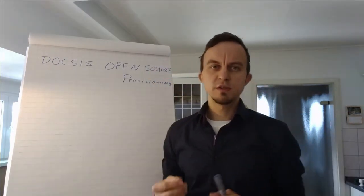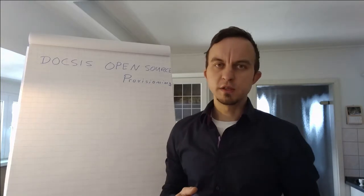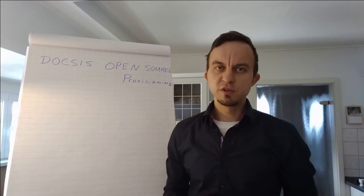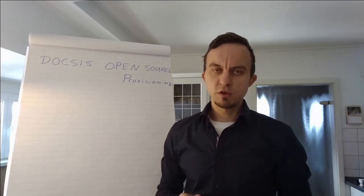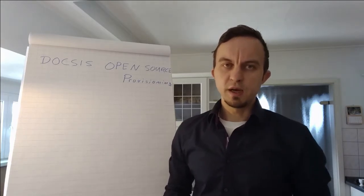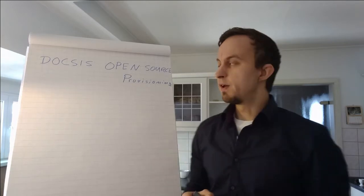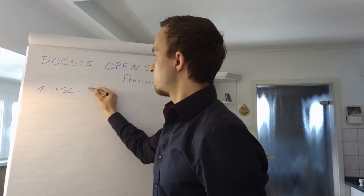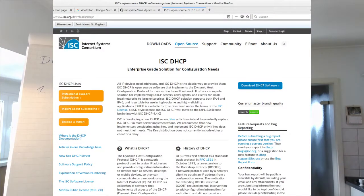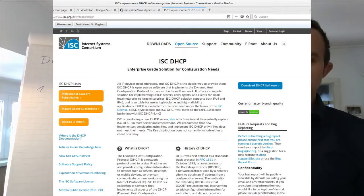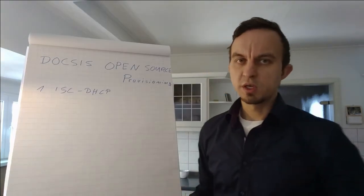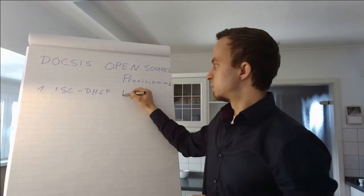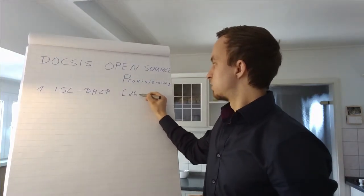The first service that we need to register a cable modem in the DOCSIS standard is the DHCP service, the Dynamic Host Configuration Protocol. In any Linux distribution there is the ISC DHCP available. I just want to write the name under which you can install it in CentOS or RedHat. The package is called DHCP.